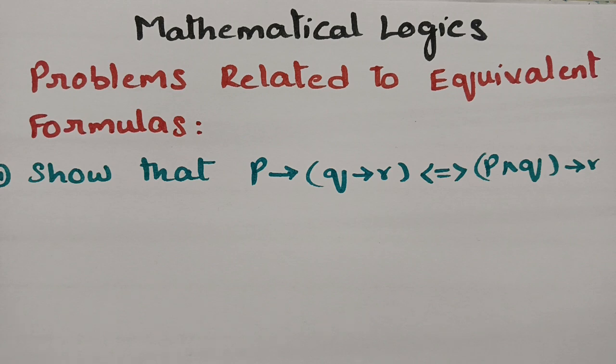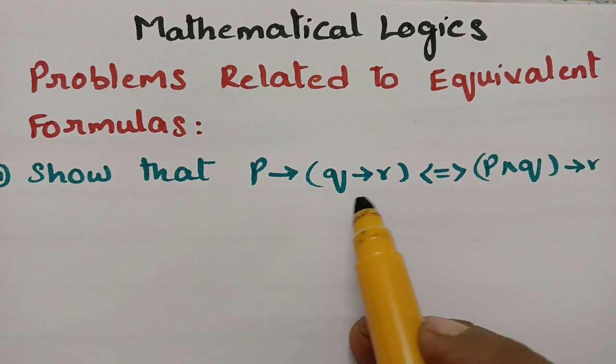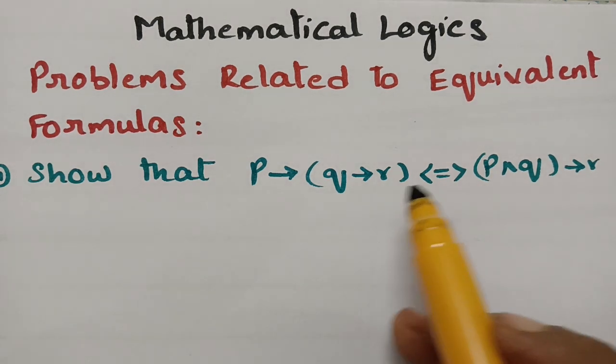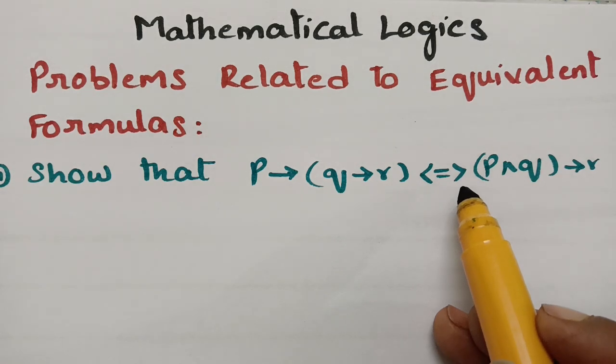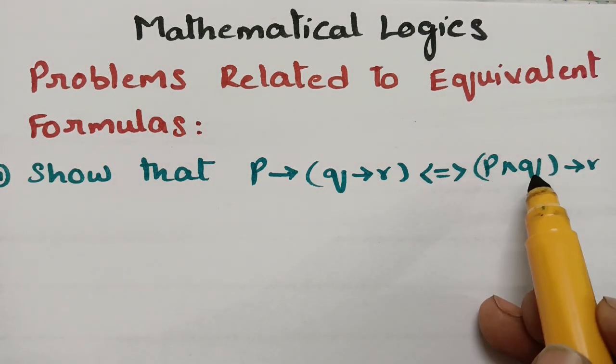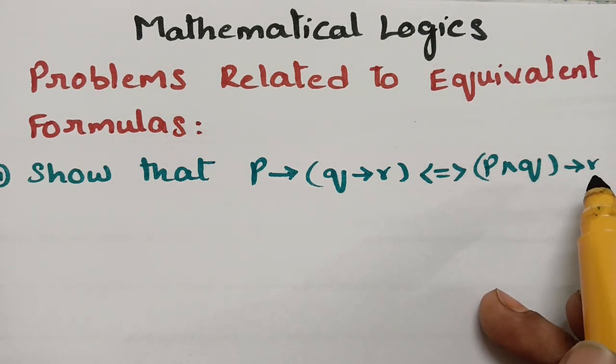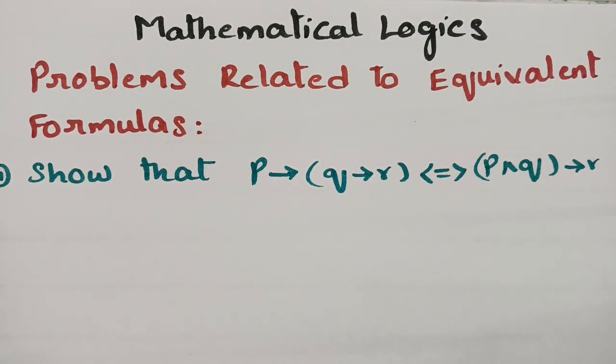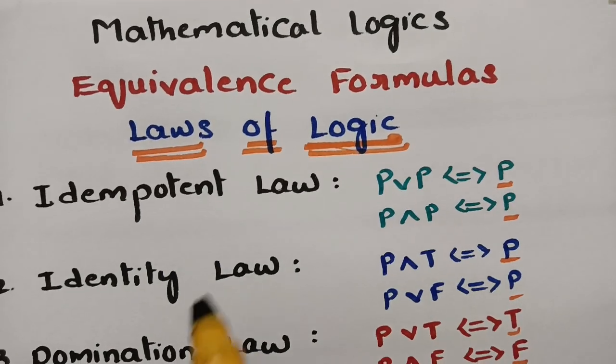Now we have to show that P implies (Q implies R) is equivalent to (P and Q) implies R. I will show you all 10 formulas here first.